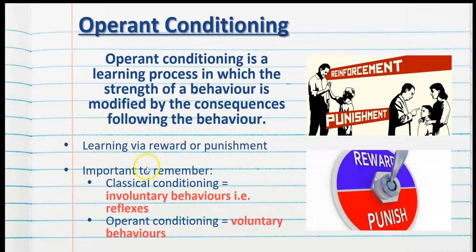It's important to remember that classical conditioning, which is the first form of learning we covered, involves involuntary behaviors which includes reflexes such as blinking, feeling queasy and salivating. Operant conditioning on the other hand involves voluntary behaviors, so the behaviors are chosen. Behavior can be continued by rewarding it or it can be decreased by punishing it.